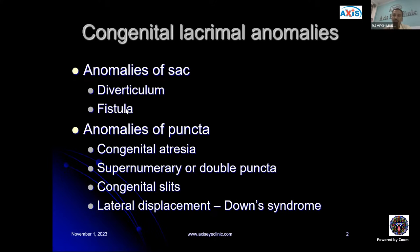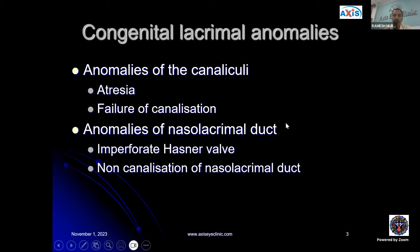Apart from anomalies of the sac and puncta, we could also have anomalies of the canaliculi — atresia, failure of opening, or very narrow slit-like opening, and failure of canalization which may be associated with punctal anomalies. Additionally, one could have anomalies of the nasolacrimal duct, an imperfect Hasner valve, or non-canalization of the nasolacrimal duct, which is very common.